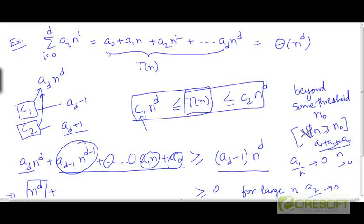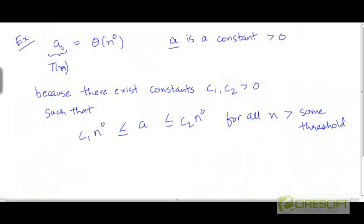In other words, this polynomial just reduces to a constant value. Let's call that constant value just a. So what if T is equal to some constant a?